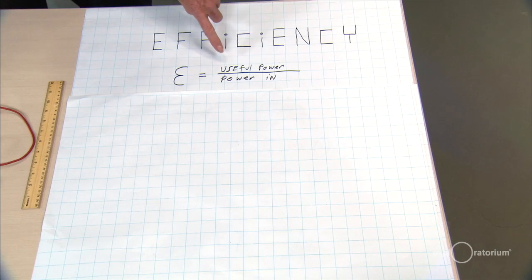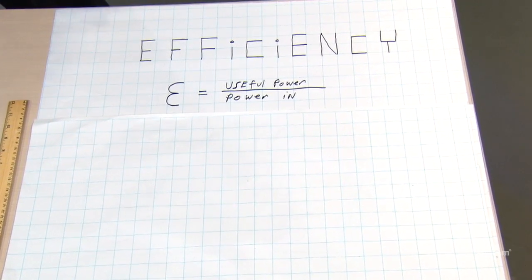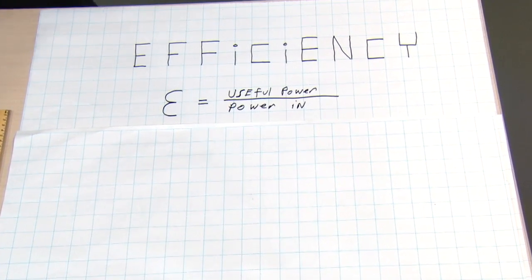Now efficiency is a very important thing in science and engineering, and it's defined as the useful power that you get out of a device, like a solar cell, divided by the power that's put into it.